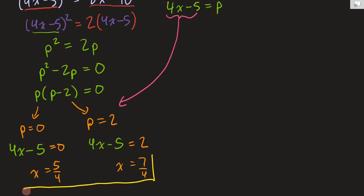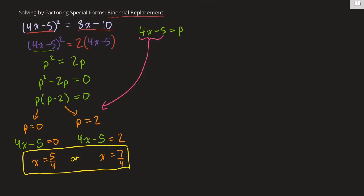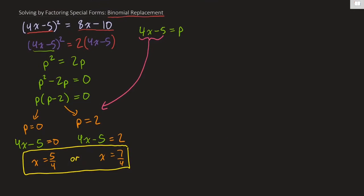There you have it — you've got your two solutions, x = 5/4 and x = 7/4, without needing to expand anything. We were able to use this clever substitution because we noticed the 4x - 5 pattern and factored this special form to get the solution.